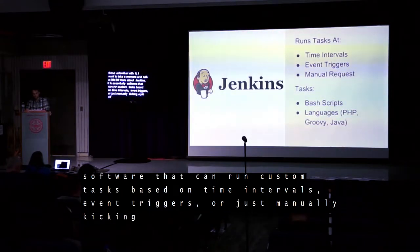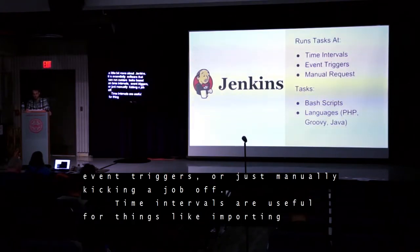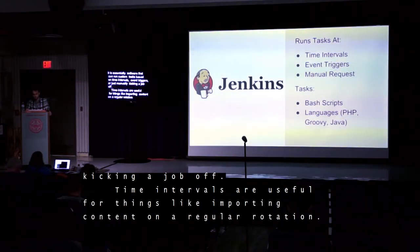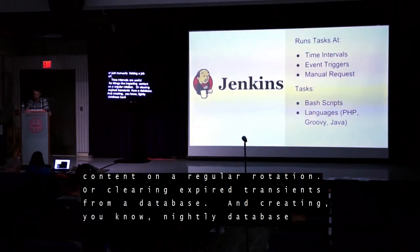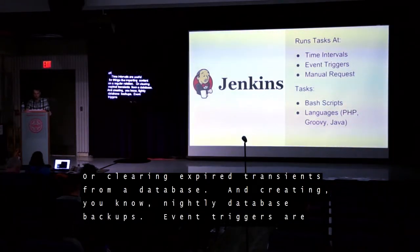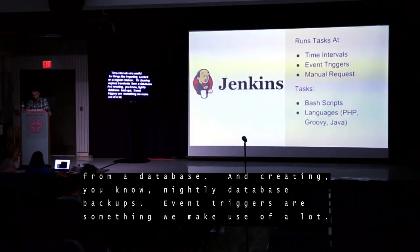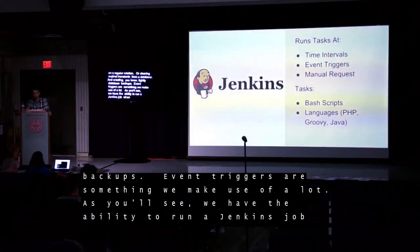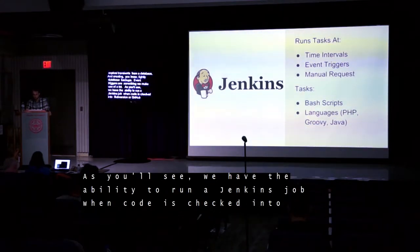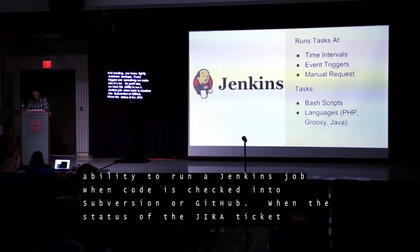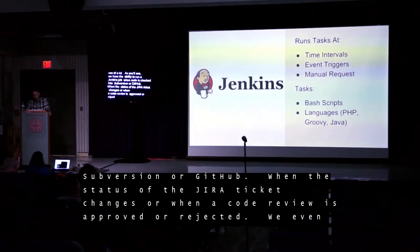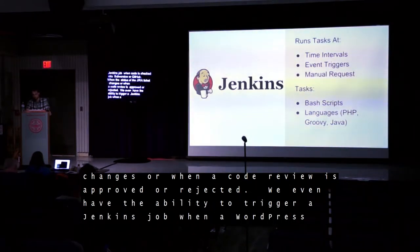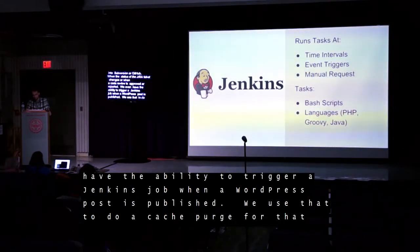Time intervals are useful for things like importing content on a regular rotation, clearing expired transients from a database, and creating nightly database backups. Event triggers are something we make use of a lot. We have the ability to run a Jenkins job when code is checked into Subversion or GitHub, when the status of a Jira ticket changes, or when a code review is approved or rejected. We even have the ability to trigger a Jenkins job when a WordPress post is published — we use that to do a cache purge for that post, the homepage, and certain section fronts.